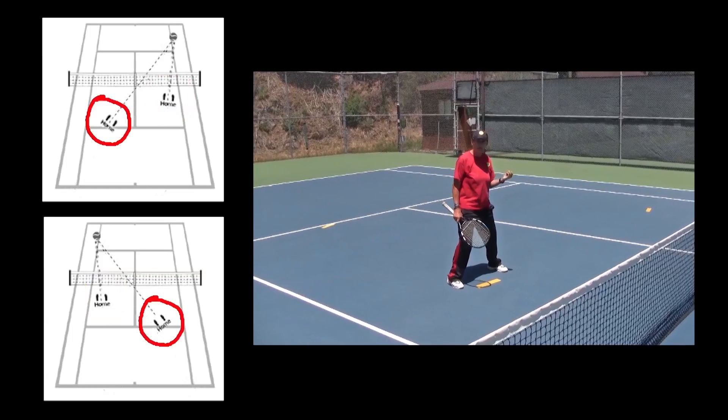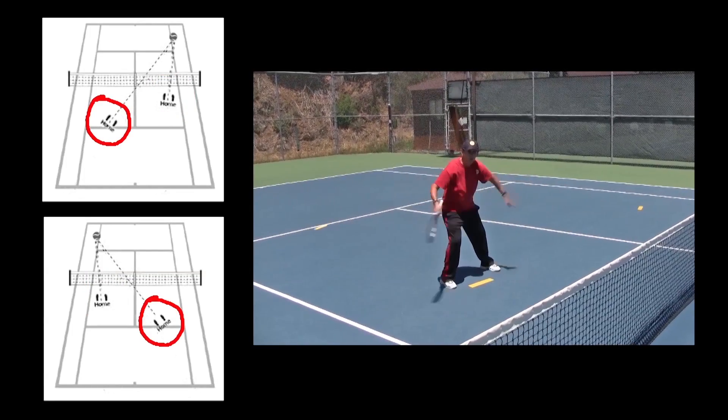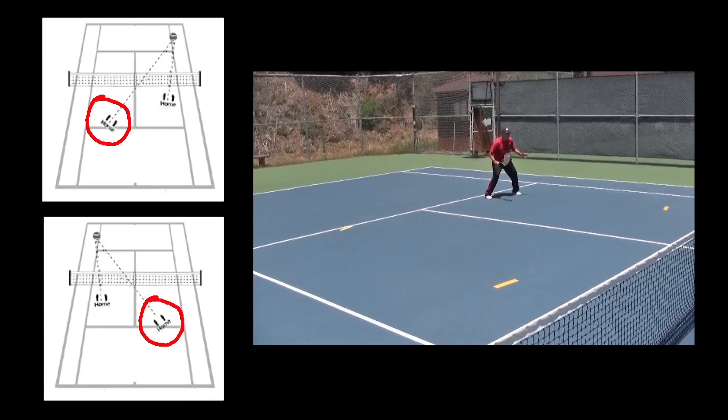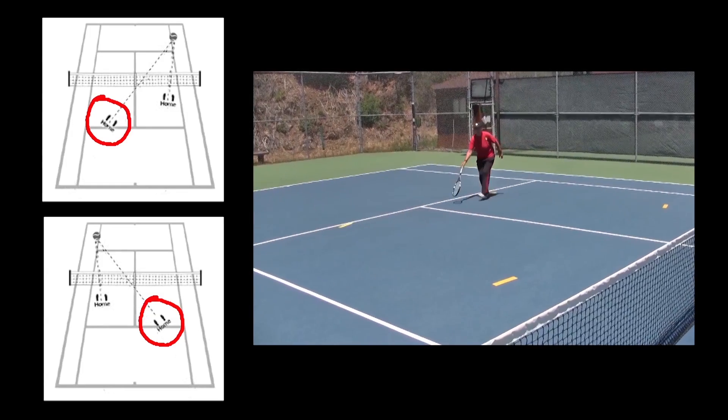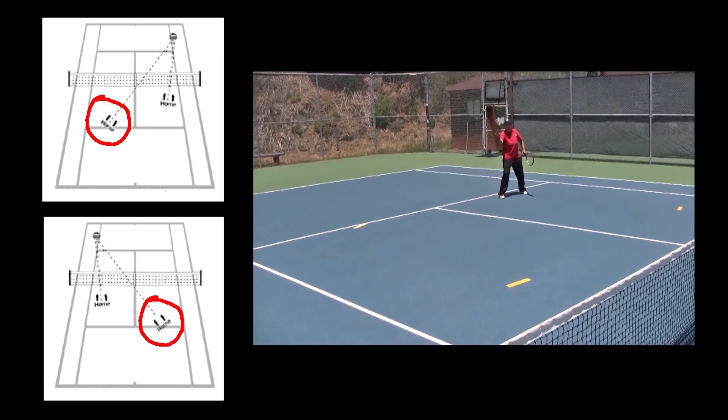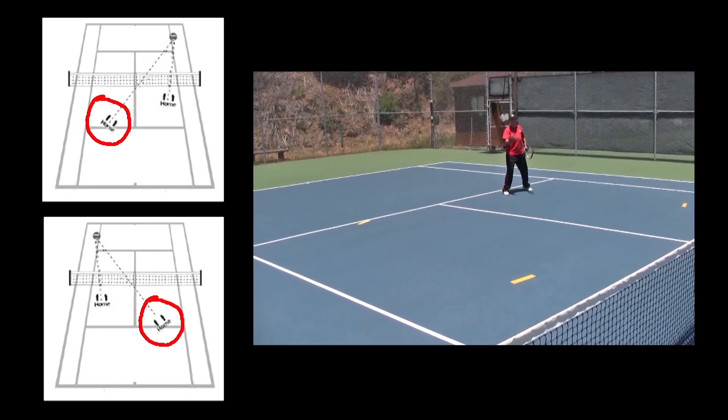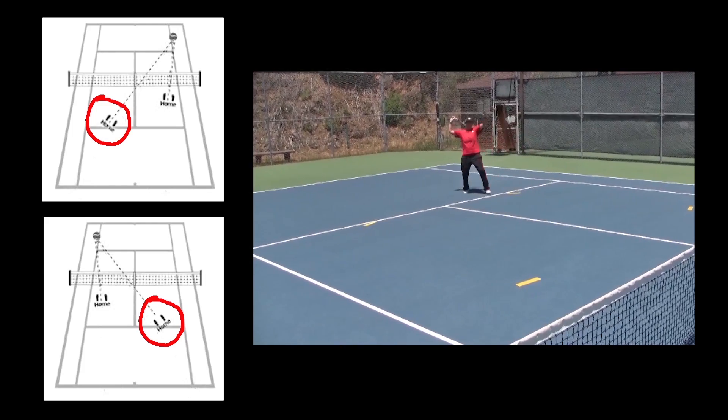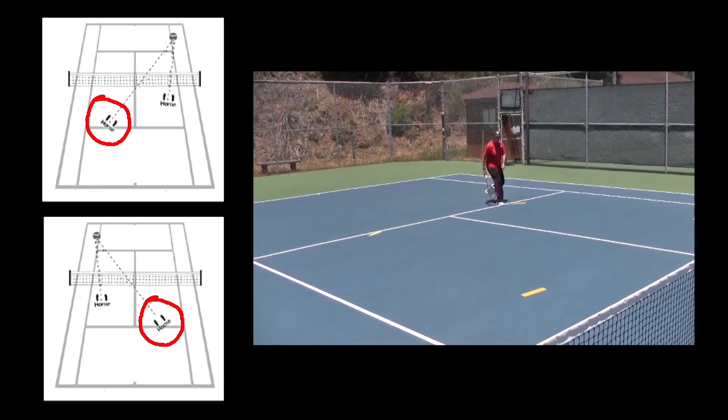I have a quarter of the court to defend, she has three quarters. She's here. Remember, this middle ball is not going to come if my partner is doing the correct thing. They may even fake a little to make sure it doesn't come here, so I can take the lob from here, I can take the sharp angle from here with a half-volley or volley.